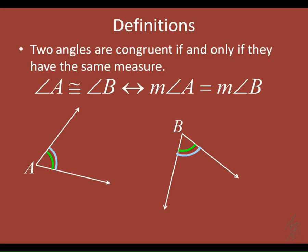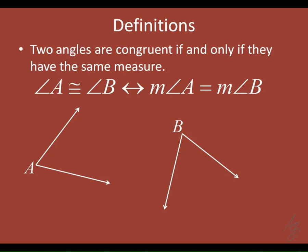Just like with segments, if these two angles are marked congruent and I tell you this one is a 68-degree angle, then the other is also 68 degrees. Going the other way: if I don't tell you they're congruent but tell you one is 71 degrees and the other is 71 degrees, then you know they're congruent. If you know they're congruent, you know their measures are equal; if you know their measures are equal, you know they're congruent.